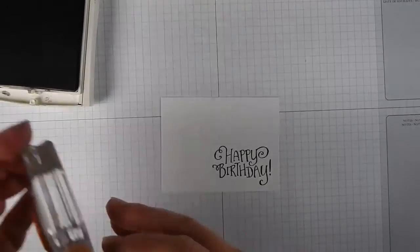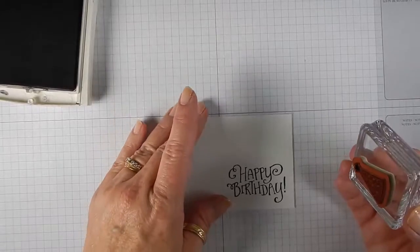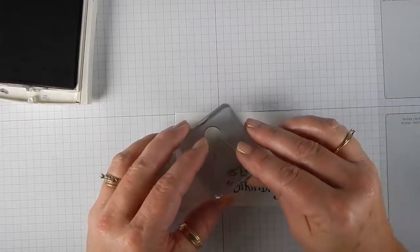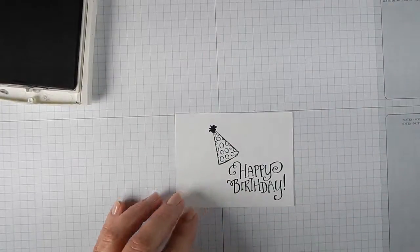Okay, so now we're going to stamp the Birthday Hat. Again, set the cardstock down. You want to stamp down and straight up.